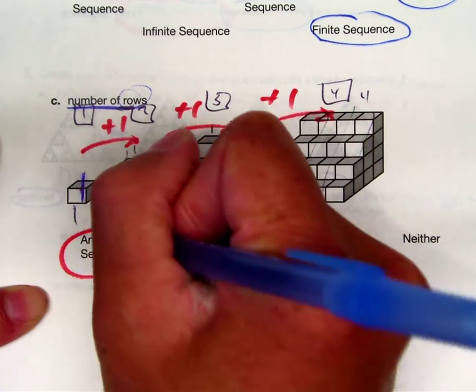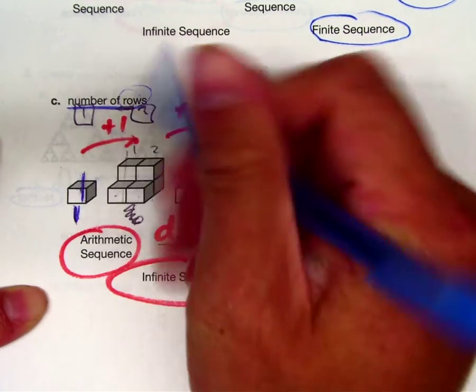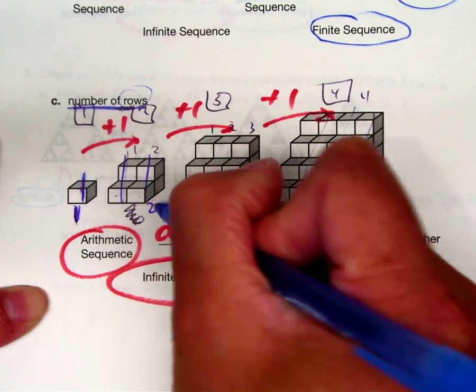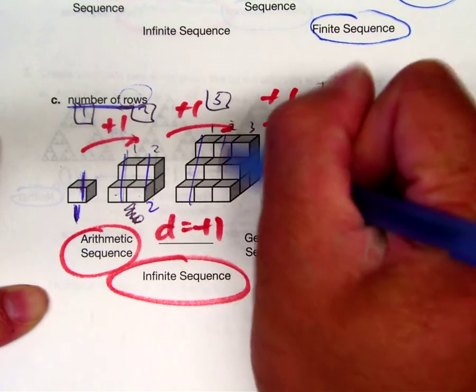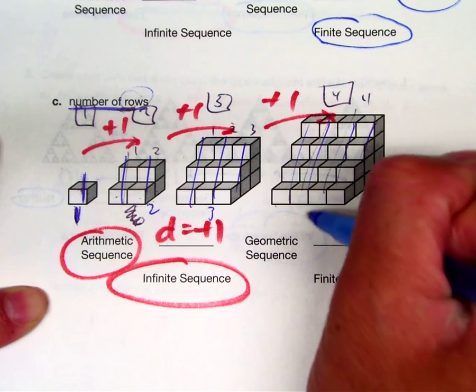So this is one layer. So this would be one. And then this one has two layers. And this one has three layers. And this one has four layers.